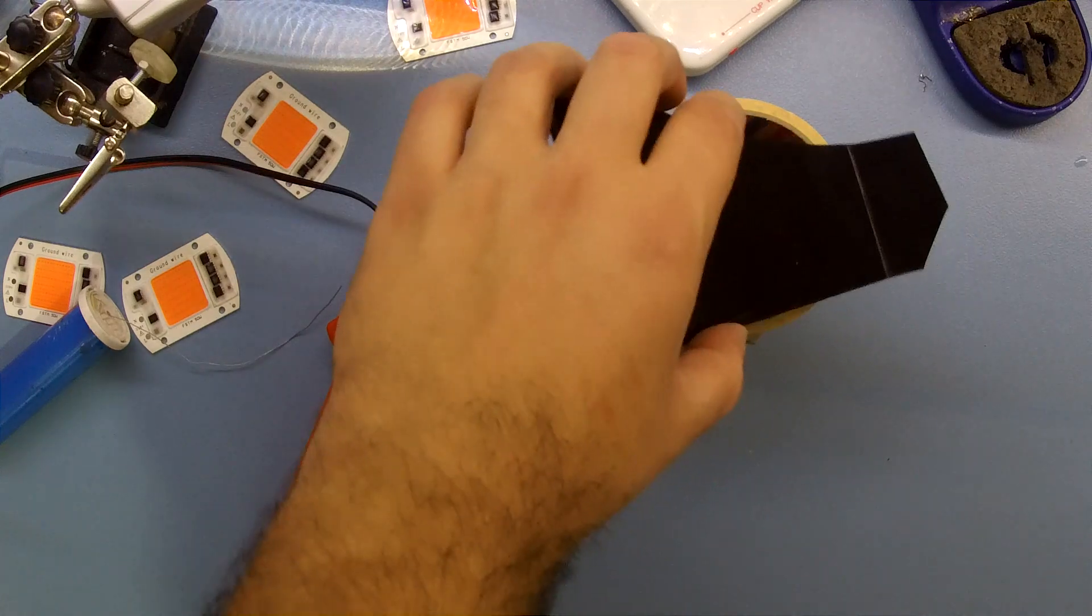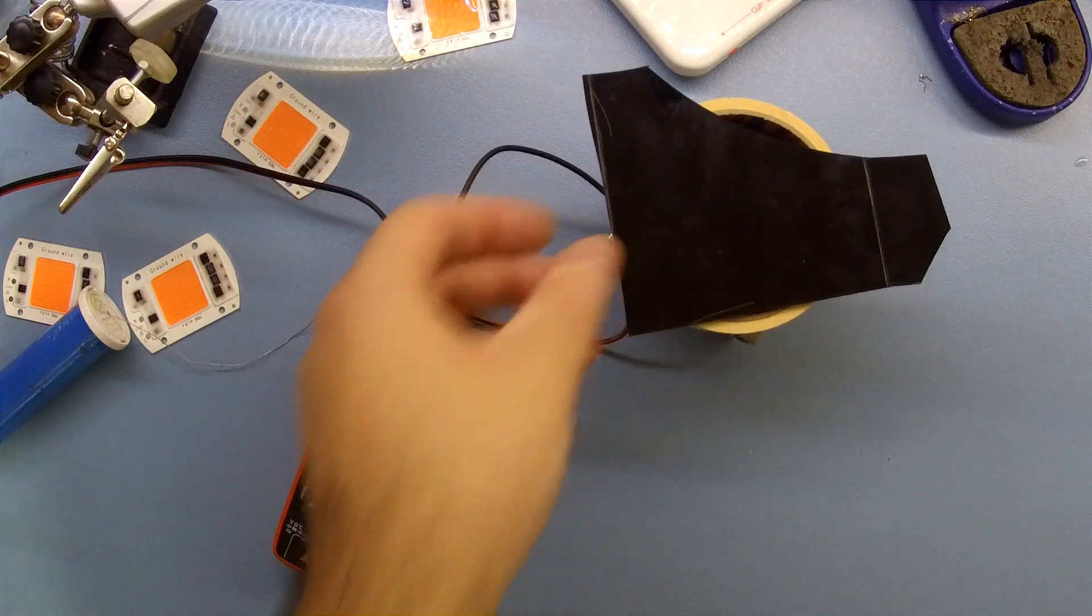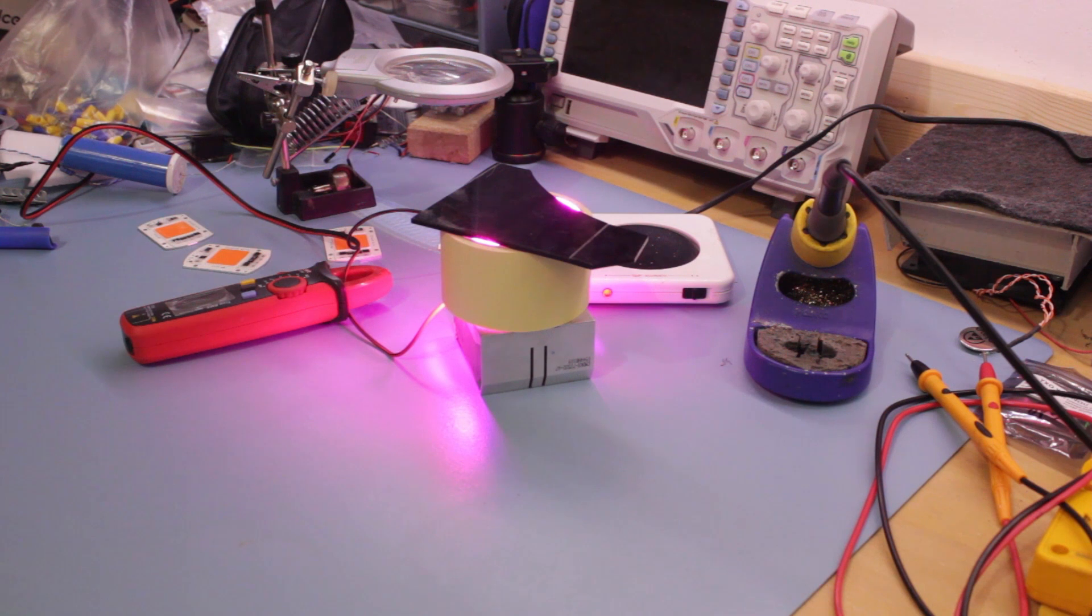Then I connected the LED chips to the power and turned on the electricity. You can see the full spectrum light.